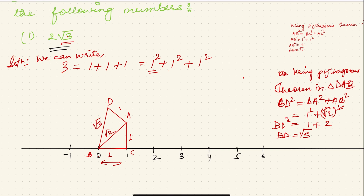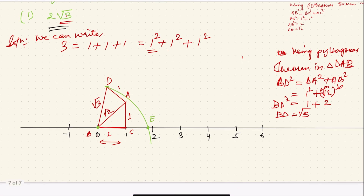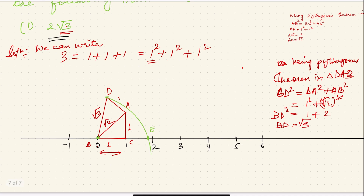I got DB to be √3. Now, take your compass. Place the pin side at B and the pencil side at D. Draw a curve. The point where the curve meets the number line — name it E. So BE = BD = √3. But the question is asking for 2√3.